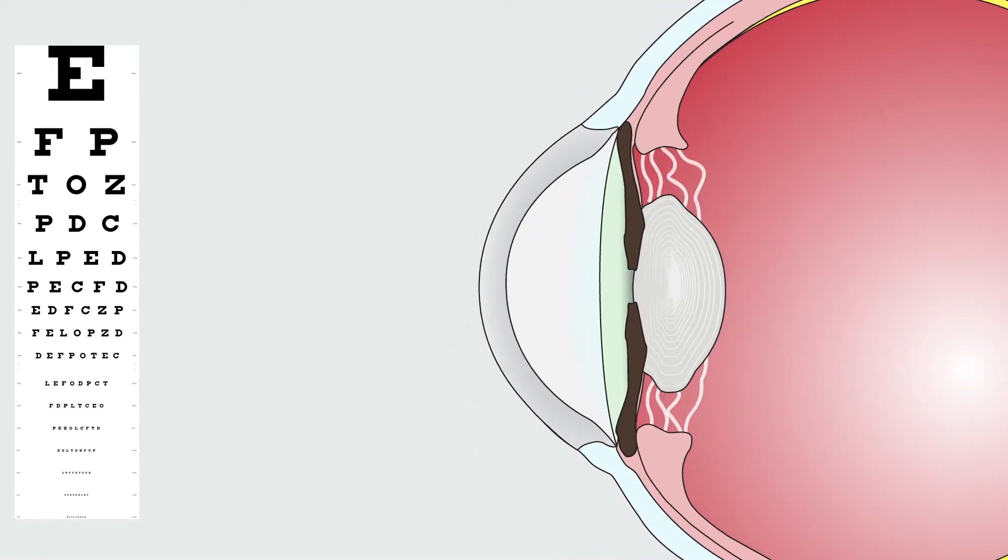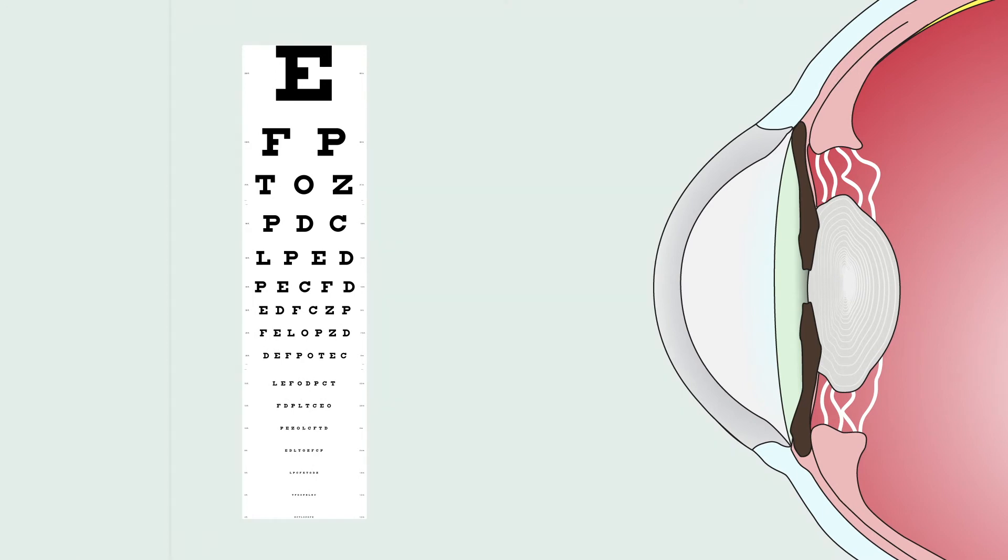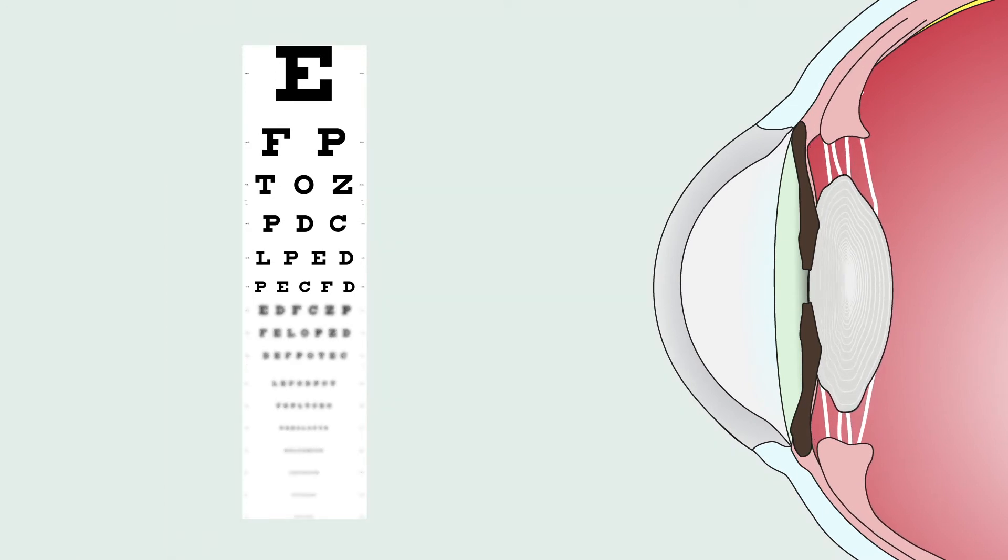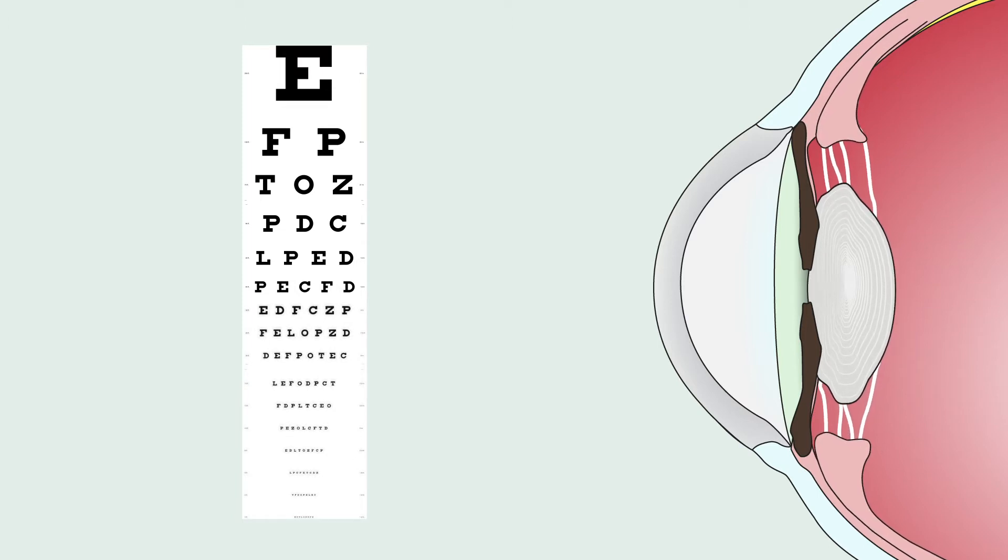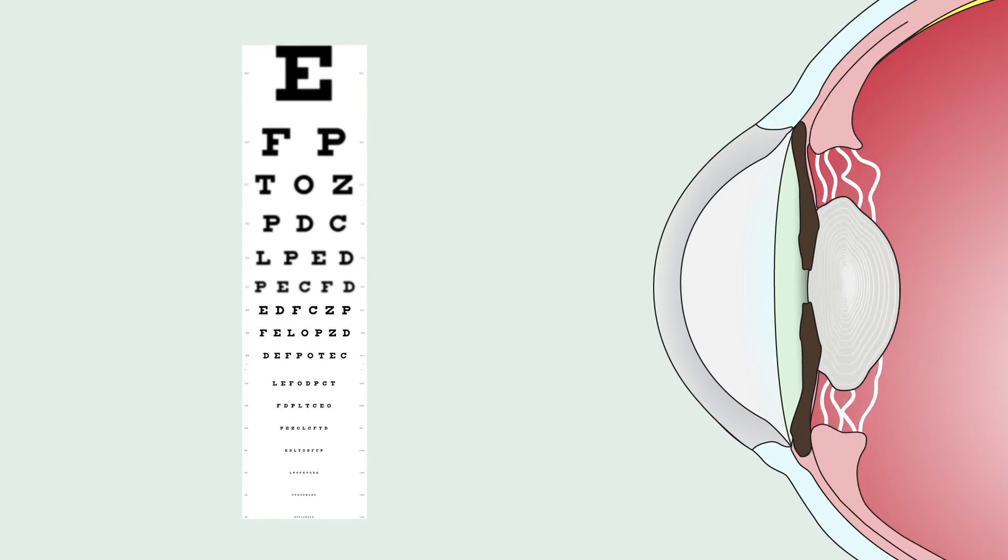When these muscles are contracted, the lens will stretch and adjust to help a person focus on farther away objects. When these same muscles are relaxed, the lens will fill out into an ovular shape allowing a person to see objects closer to them.